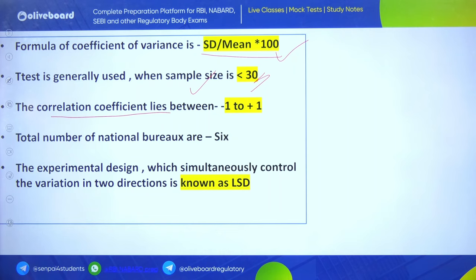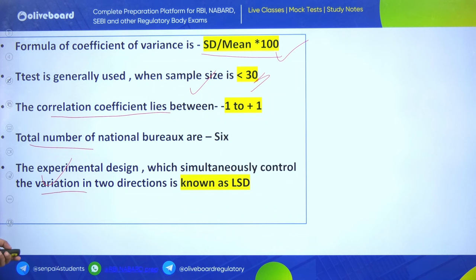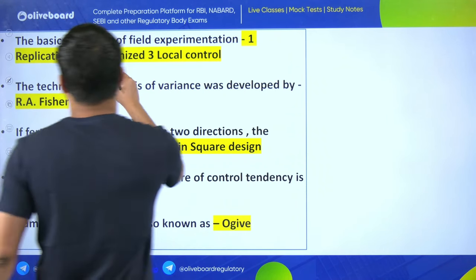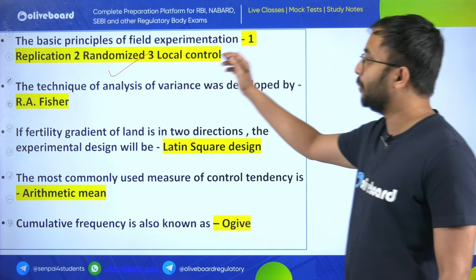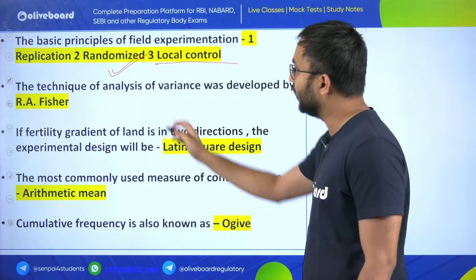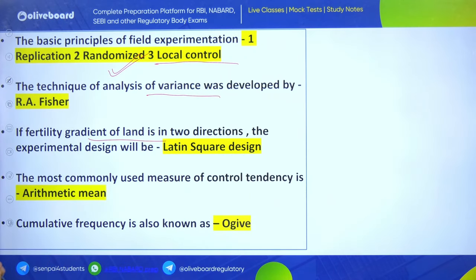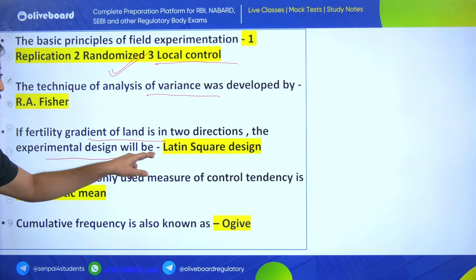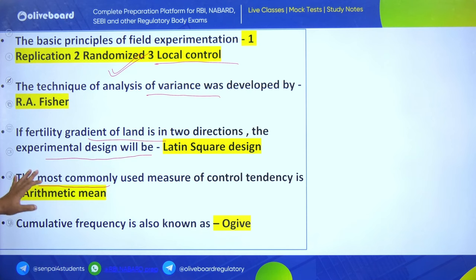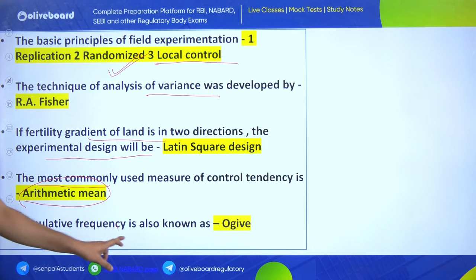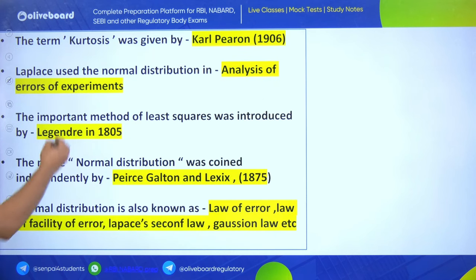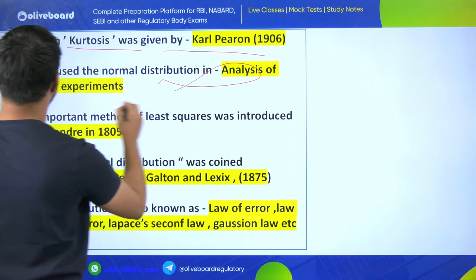Correlation coefficient lies between -1 to +1. Total number of national bureaus is 6. The experimental design that simultaneously controls variation in two directions is known as LSD (Latin Square Design). The basic principles of field experimentation are replication, randomization, and local control. The technique of analysis of variance was developed by R.A. Fisher.